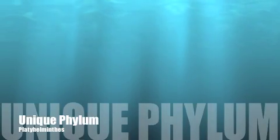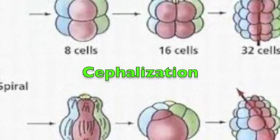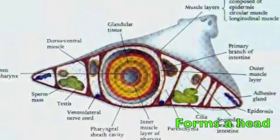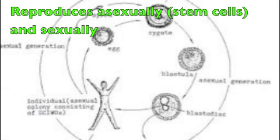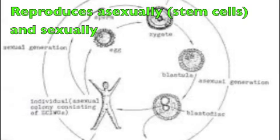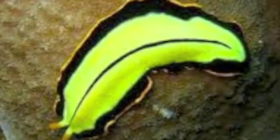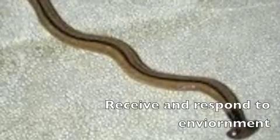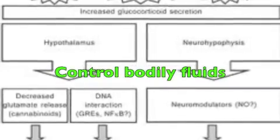What makes Platyhelminthes different from other phyla? Platyhelminthes go through a process called cephalization, in which they form a head. They can produce gametes asexually as well as sexually using the process of stem cells. This is an advanced trait compared to other phyla, allowing them to receive and respond to information from the environment, control bodily fluid concentration, and live more effectively.